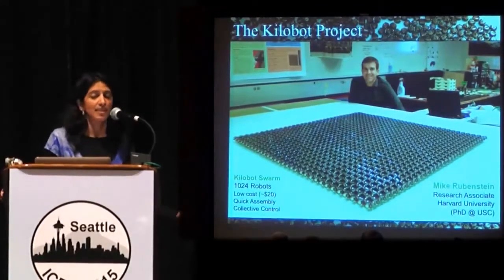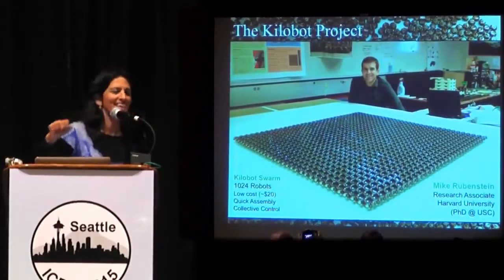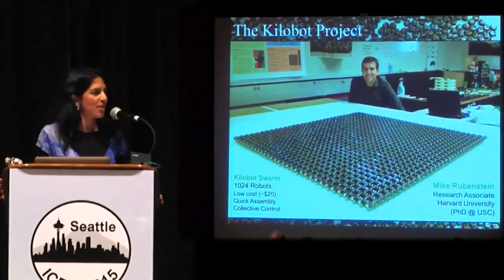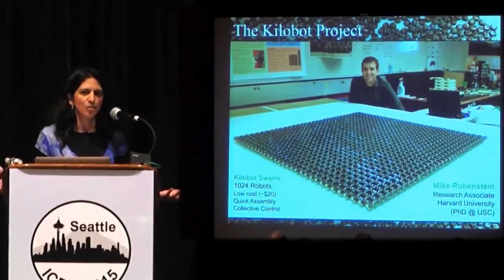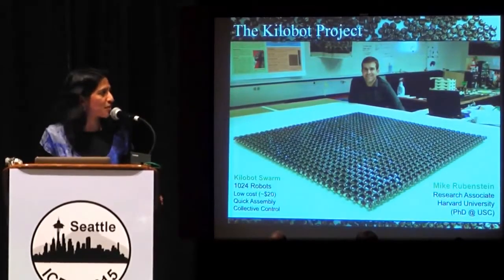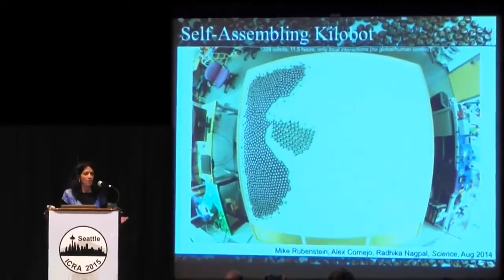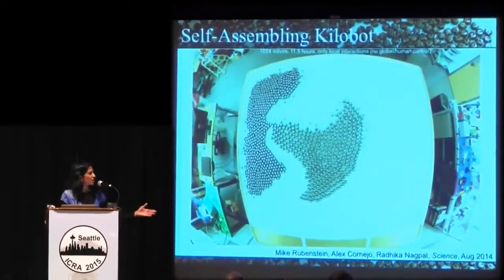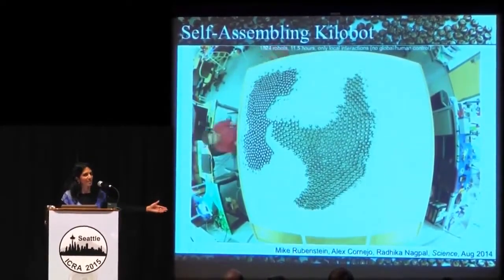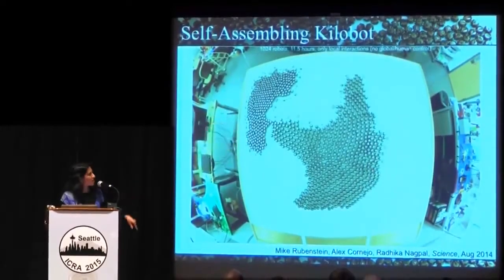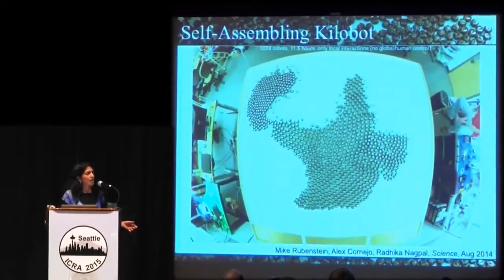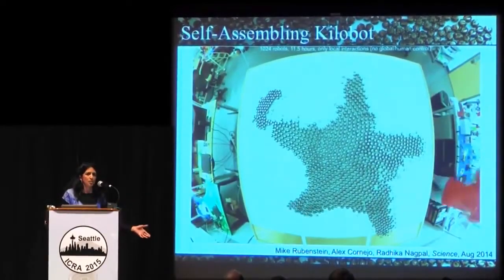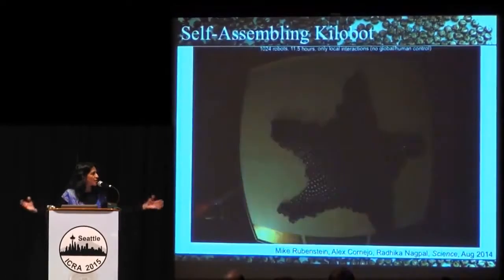This project was conceived of and led by Mike Rubenstein. We do actually have 1,024 — a kilo of robots — in our lab. They're low cost, quick to assemble, and we can collectively control them. This is one of our most recent thousand-robot experiments where the robots are self-assembling into a complex shape decided ahead of time. There are a thousand robots, this is an eleven-hour experiment sped up, and there's no global eye, no global controller, no global signal. All of this happens by robots interacting with approximately robots that are three hops away — really small groups cooperating to create this large-scale behavior.